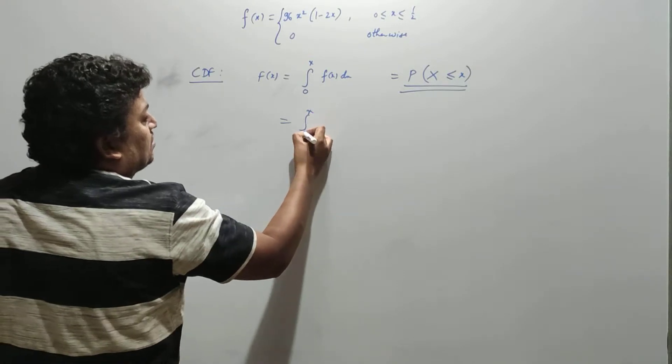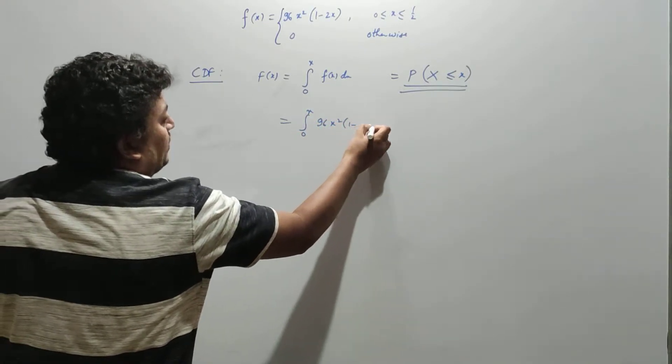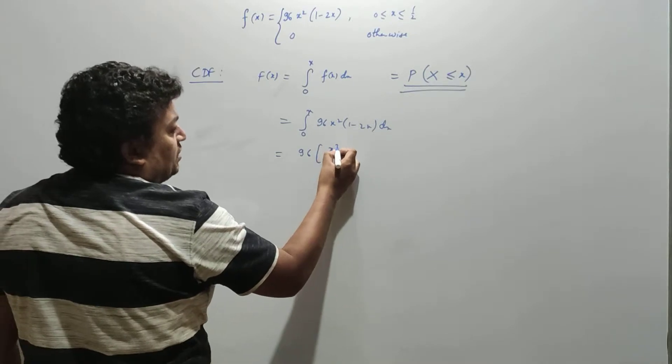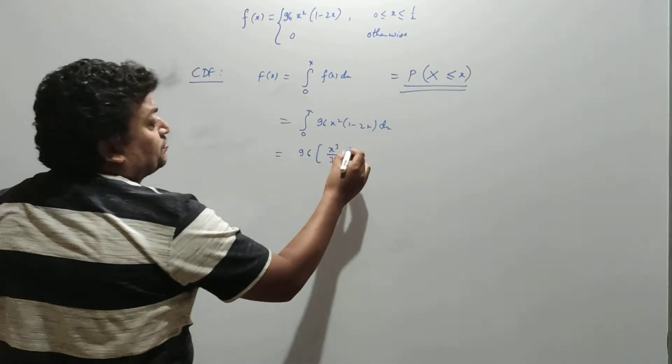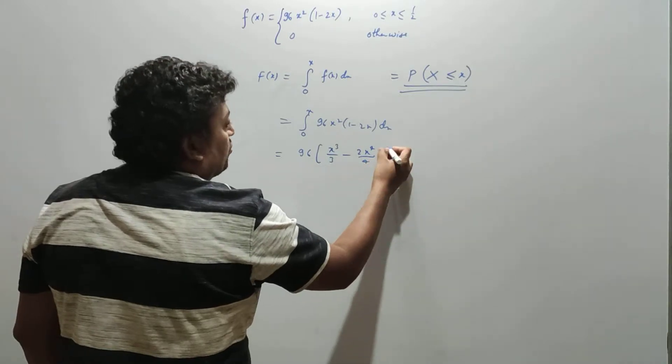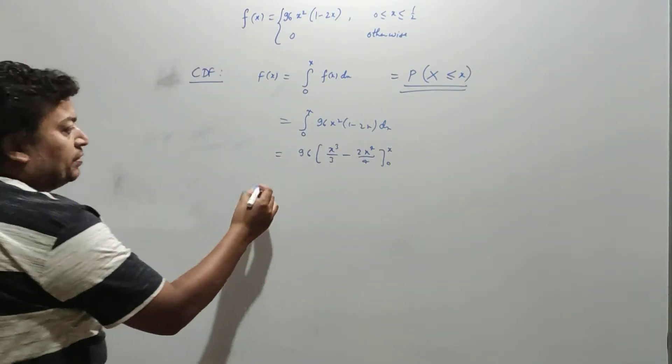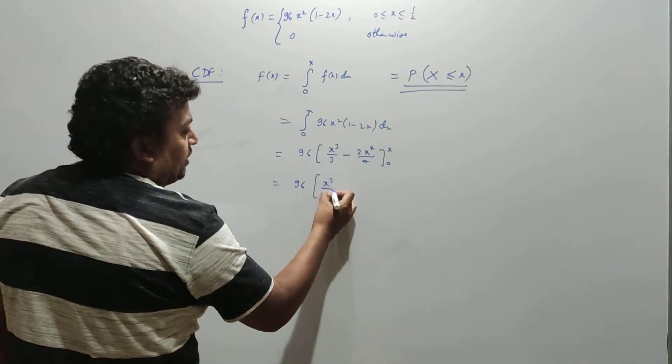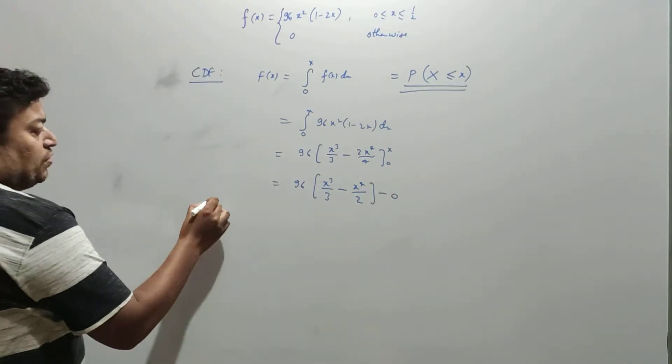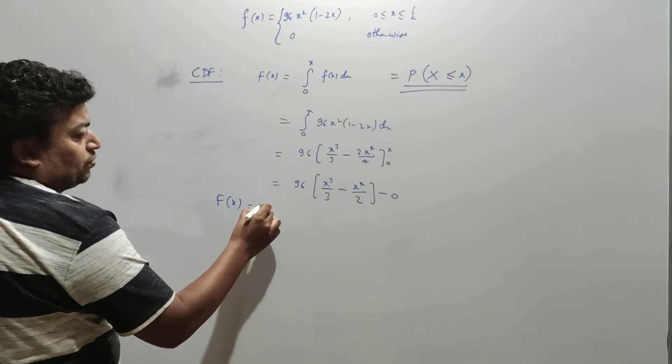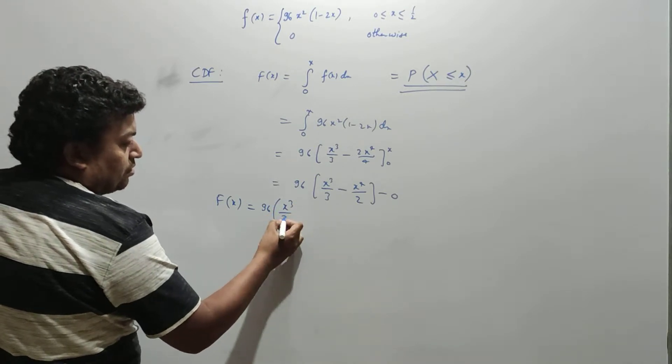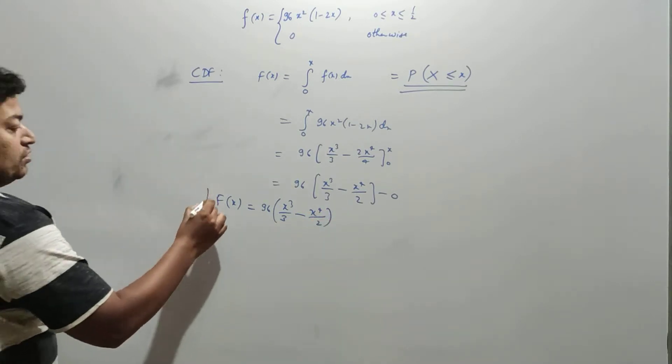So this becomes the integral from 0 to x of 96x²(1-2x)dx, which equals 96 times (x³/3 - x⁴/4) evaluated from 0 to x. So our CDF becomes F(x) = 96(x³/3 - x⁴/2).